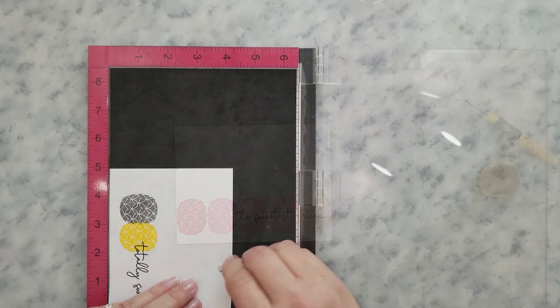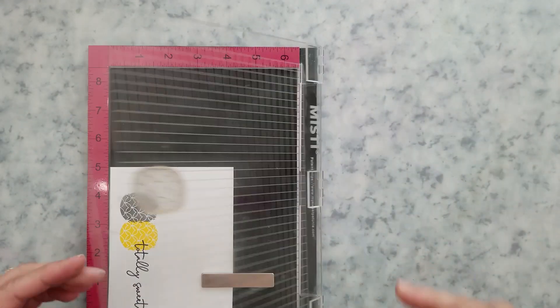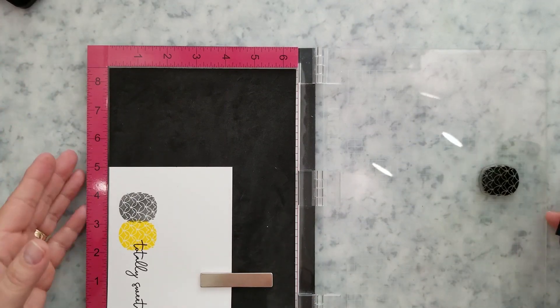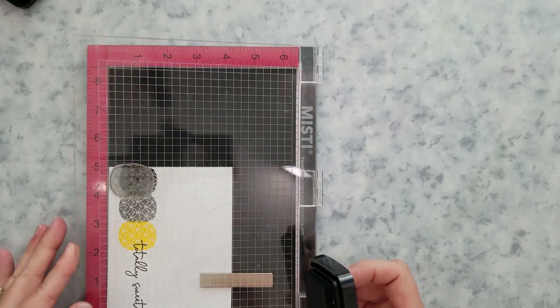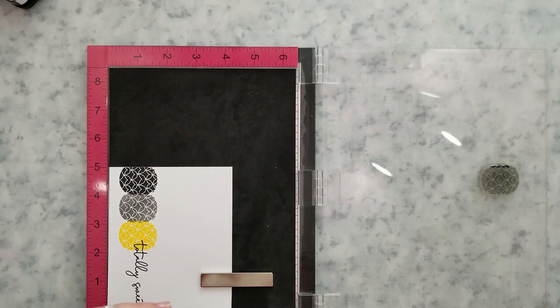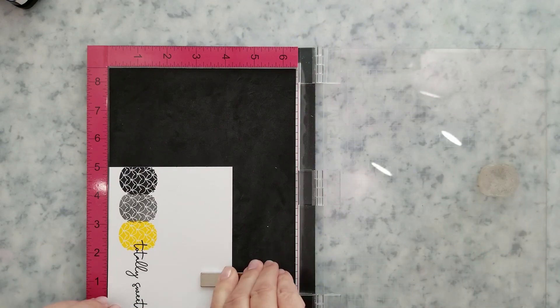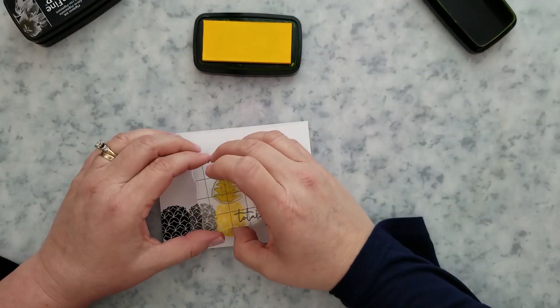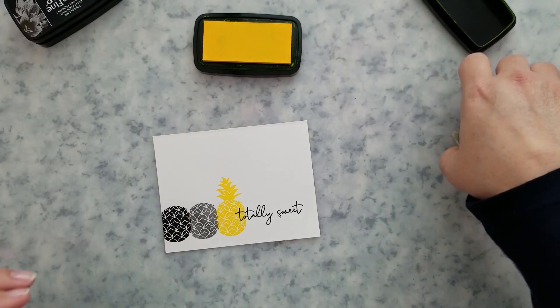Okay, moving on to the next panel. I've used Versafine Clair Nocturne, Morning Mist, and Cheerful inks. I'm only stamping three pineapples on this one. Let's talk about the crown of each of the pineapples. I used an acrylic block, very easy to line these up.